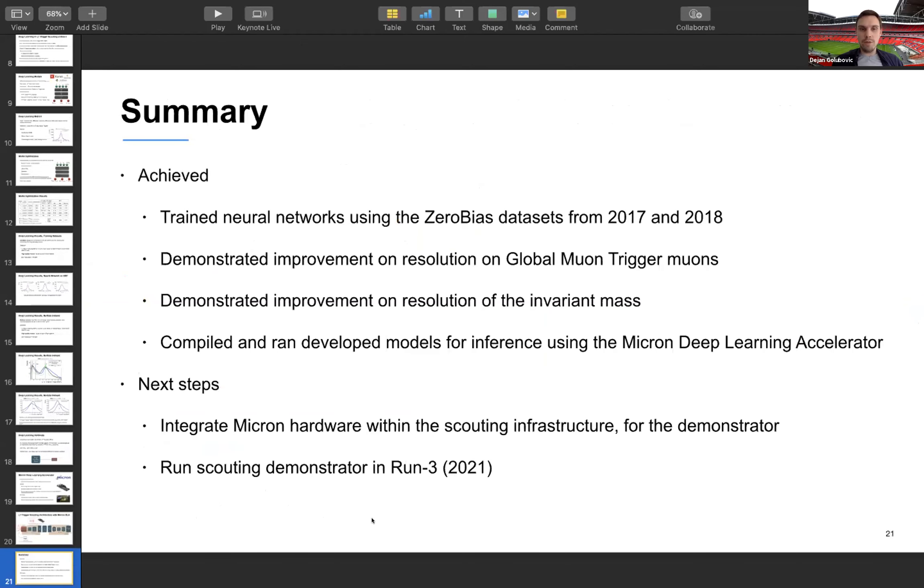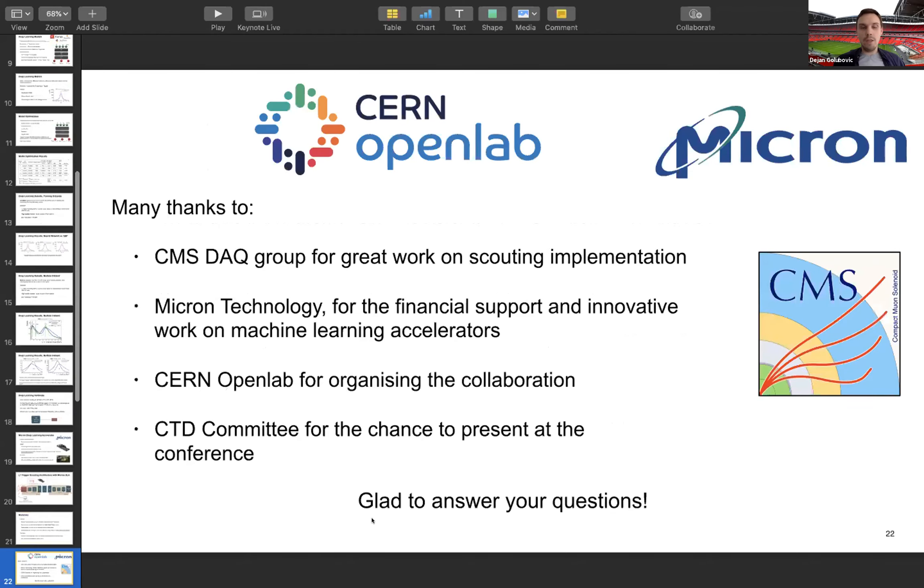So to have a summary, at this project we have trained neural networks using the zero bias data sets from 2017 and 2018 and we have demonstrated improvement on resolution on global muon trigger muons. We have demonstrated improvement on the resolution of the invariant mass and we have run our models using Micron deep learning compiler. The next steps are to integrate Micron hardware within the scouting infrastructure for the next demonstrator and to run the demonstrator in run three in 2021. Again, I'd like to thank my colleagues for the great work on this project, to thank the organizers for the chance to present and to Micron for financial contribution to this project and to OpenLab for organizing this collaboration. So thank you.